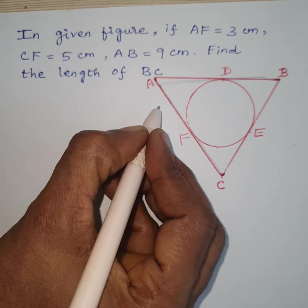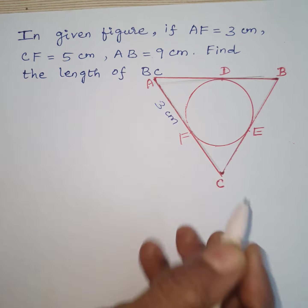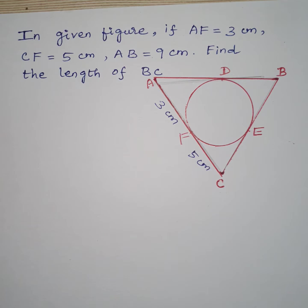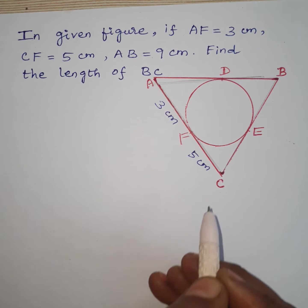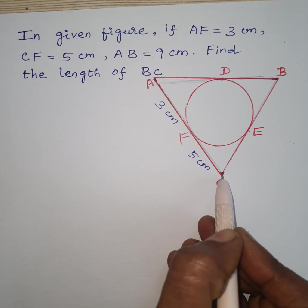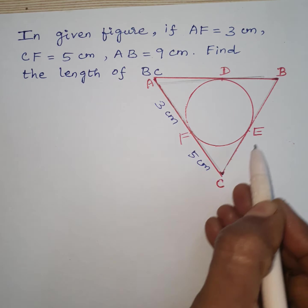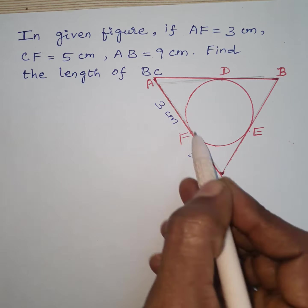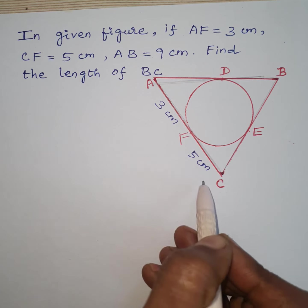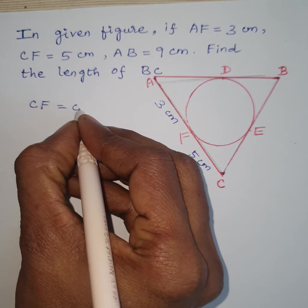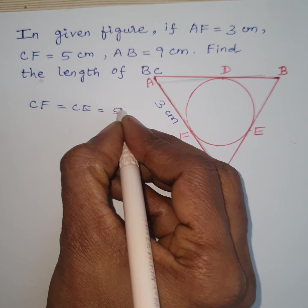Here given AF is equal to 3 cm and CF is equal to 5 cm. We know that the length of tangents drawn from an external point to a circle are equal. Considering C as an external point, CF and CE are the tangents to the circle. Therefore, CF is equal to 5 cm, so CE is also equal to 5 cm.